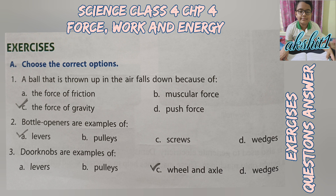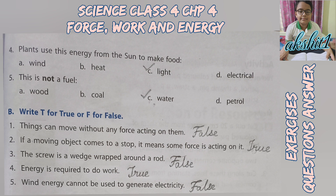Choose the correct options: First, a ball thrown up in the air falls down because of (c) the force of gravity. Second, bottle openers are examples of (a) levers. Third, doorknobs are examples of (c) wheel and axle. Fourth, plants use (c) light energy from the sun to make food. Fifth, this is not a fuel — (c) water.